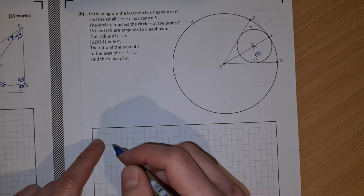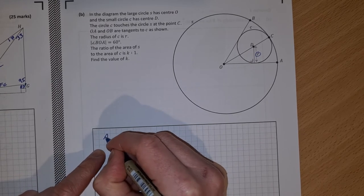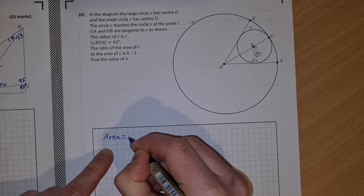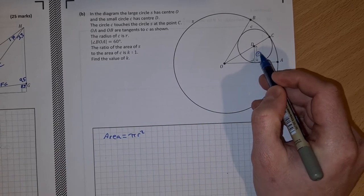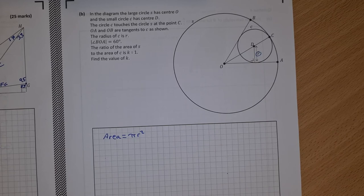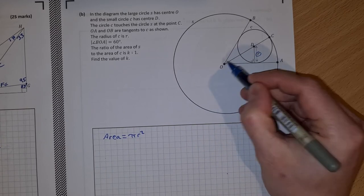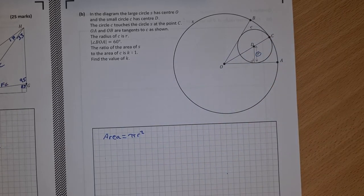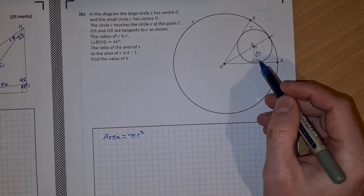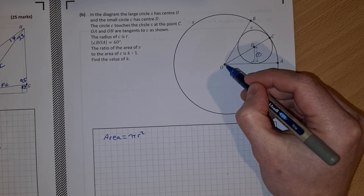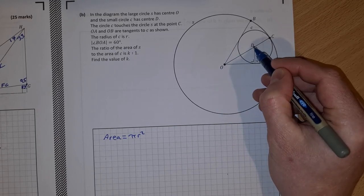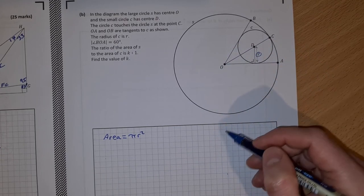All right, so area we know is pi r squared. We have the radius of the small circle which is r. We need the radius of the big circle, so we need this distance here OC. We're going to write that in terms of r. We want them in terms of each other, so I'm going to start by trying to find this length here OD in terms of r.